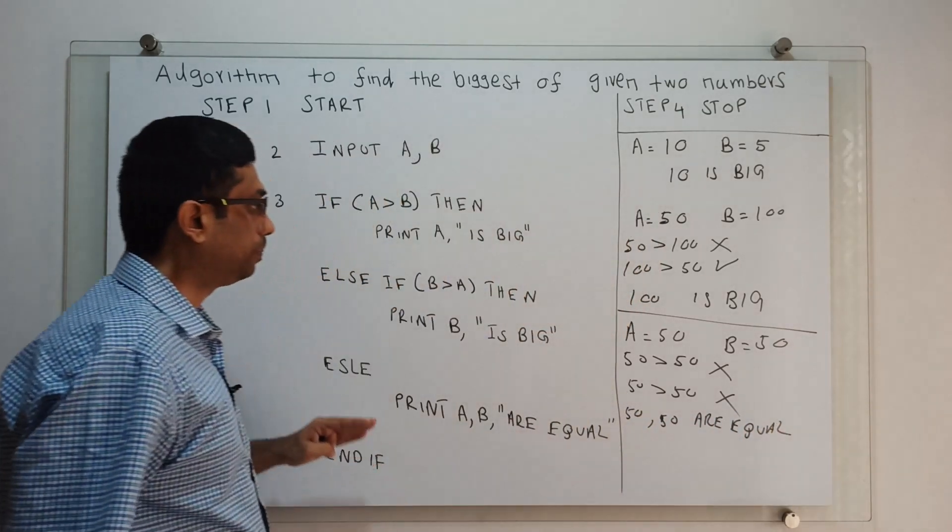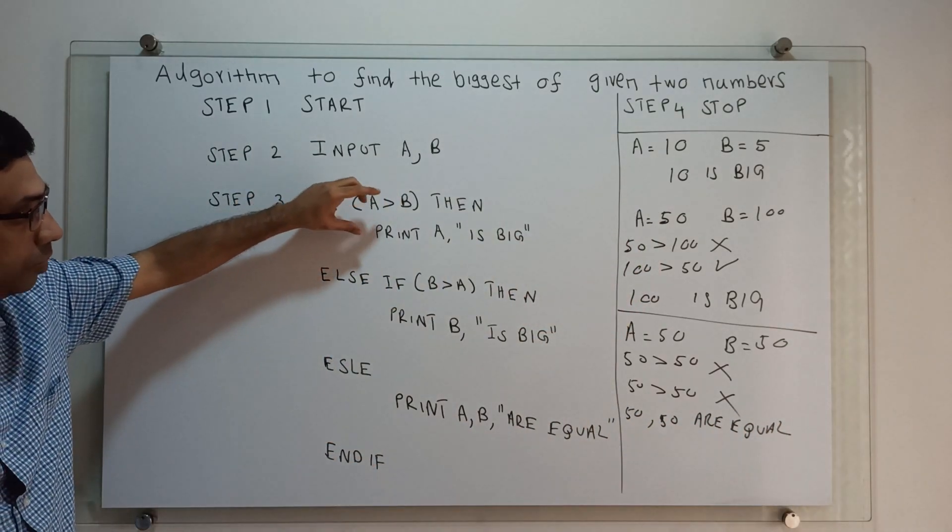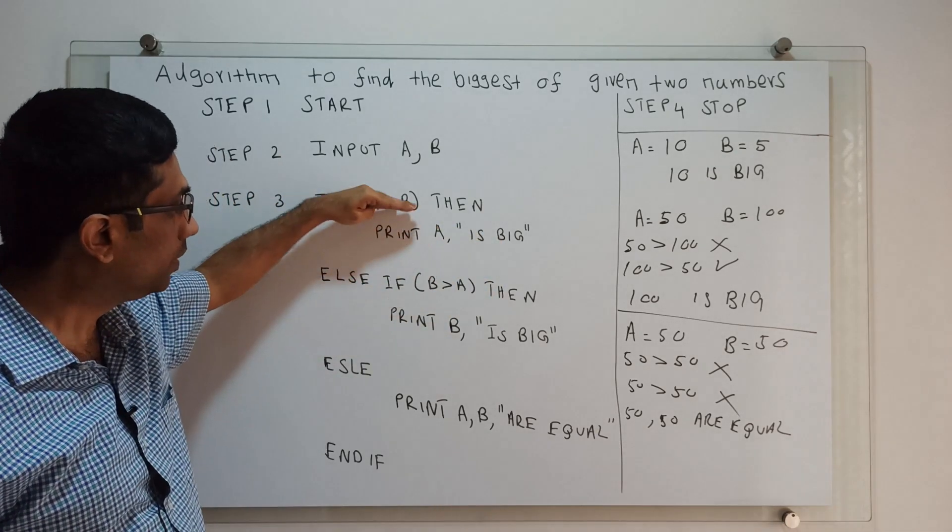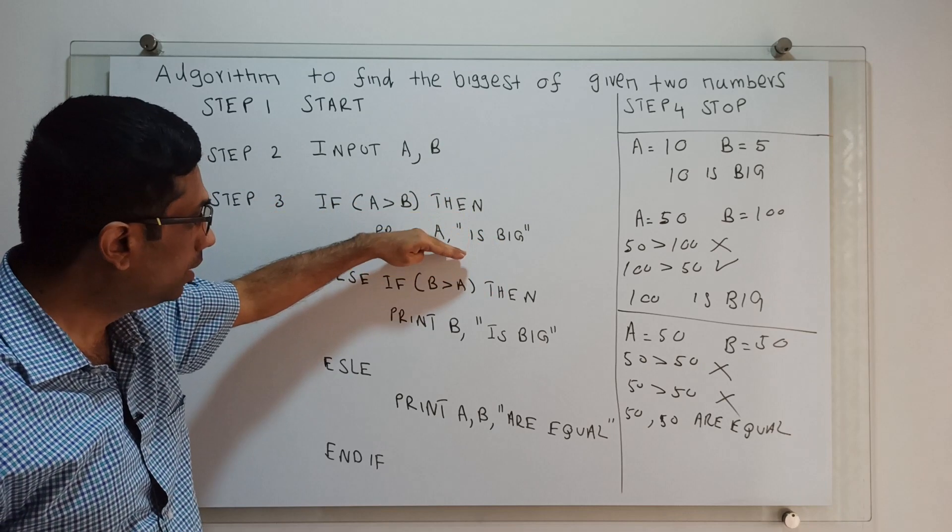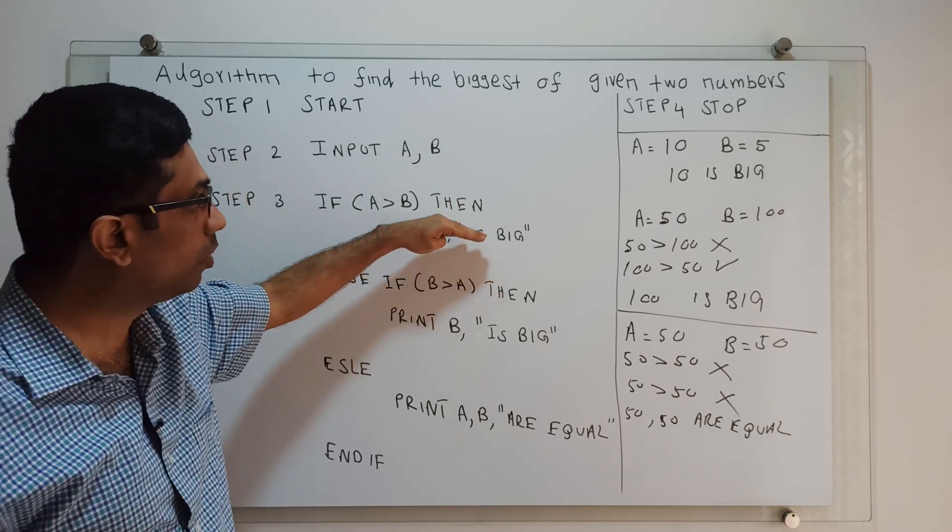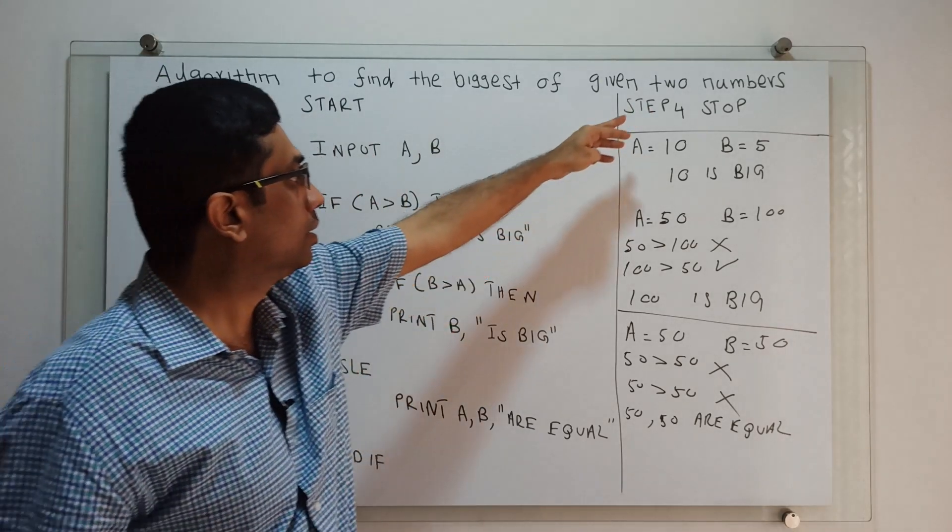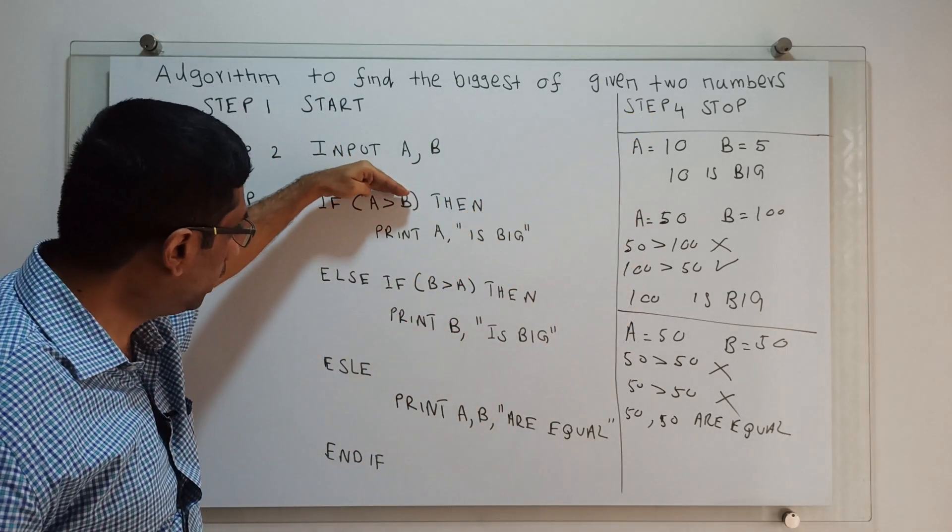If the if-block condition is true, the control comes to the statement inside the block. If the condition is true, the control executes the statement and goes to the statement next to the if-else block, that is stop. If A greater than B, the condition is false,